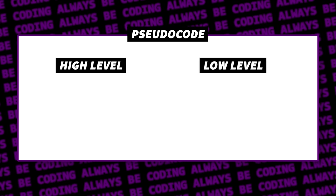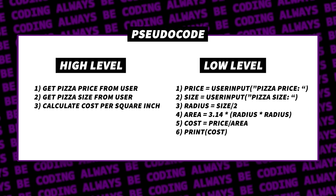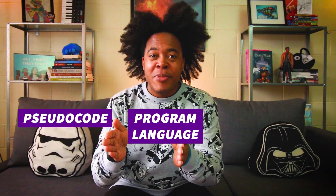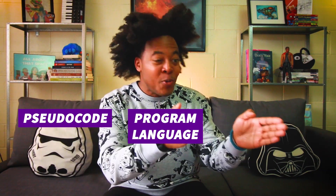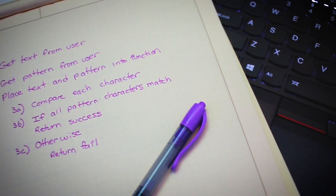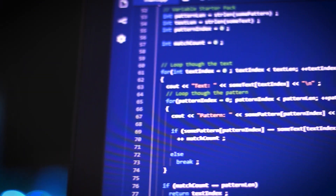Pseudocode comes in many flavors — it can be as high level or as low level as you want. High level means it's getting really close to written or spoken language, and low level means it's getting really close to a programming language. It goes from pseudocode to a programming language, then to ones and zeros.